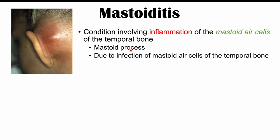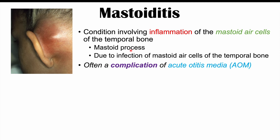Mastoiditis is due not only to inflammation but also to infection of the mastoid air cells of the temporal bone. This infection is often a complication involving acute otitis media, which is a middle ear infection. A middle ear infection can in some cases spread into the mastoid air cells, leading to inflammation and infection of those air cells, resulting in mastoiditis.